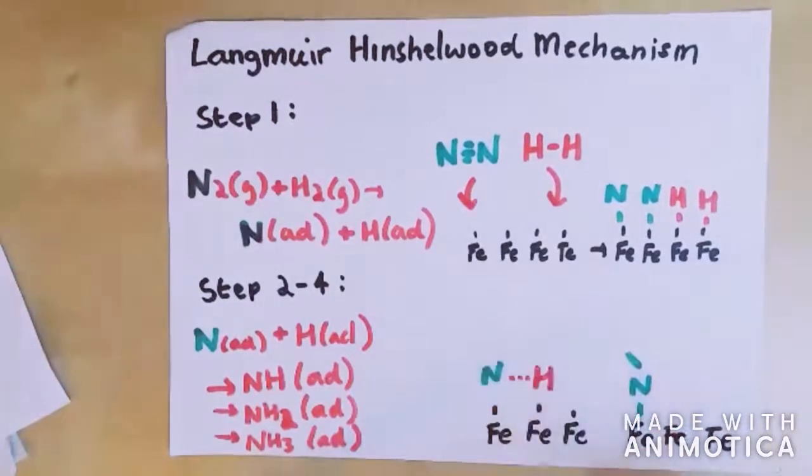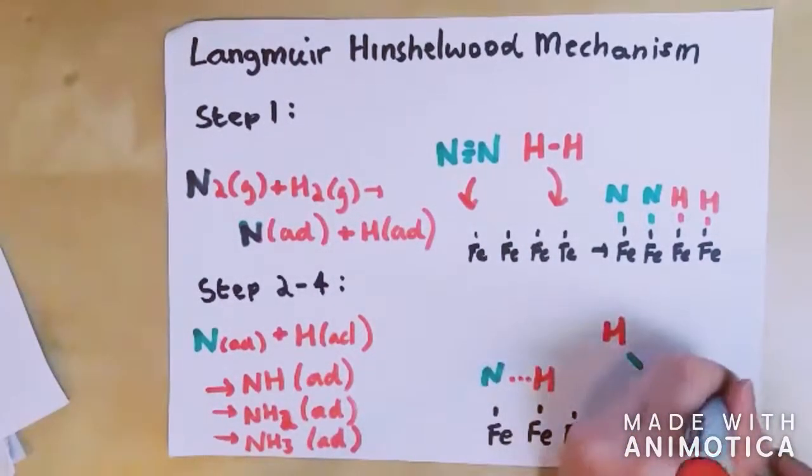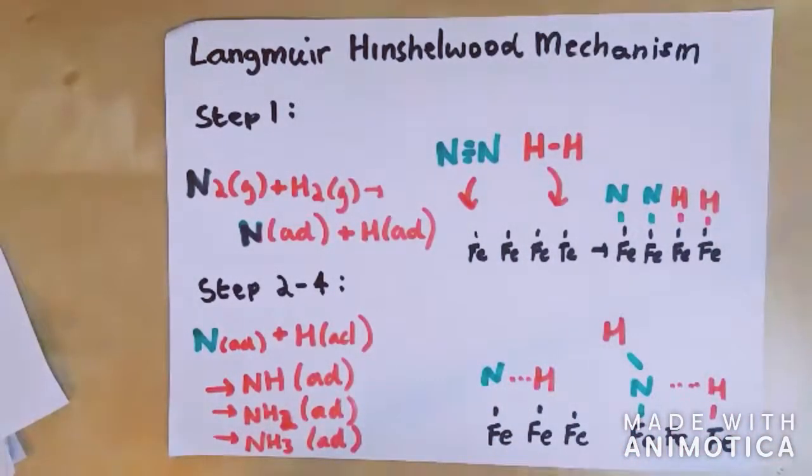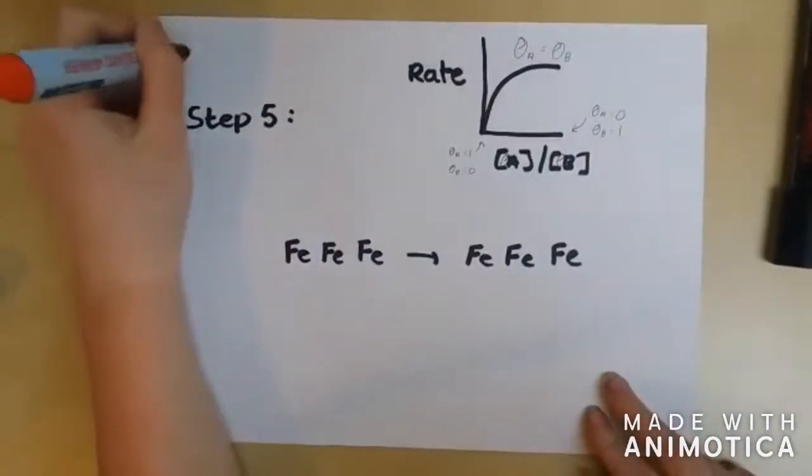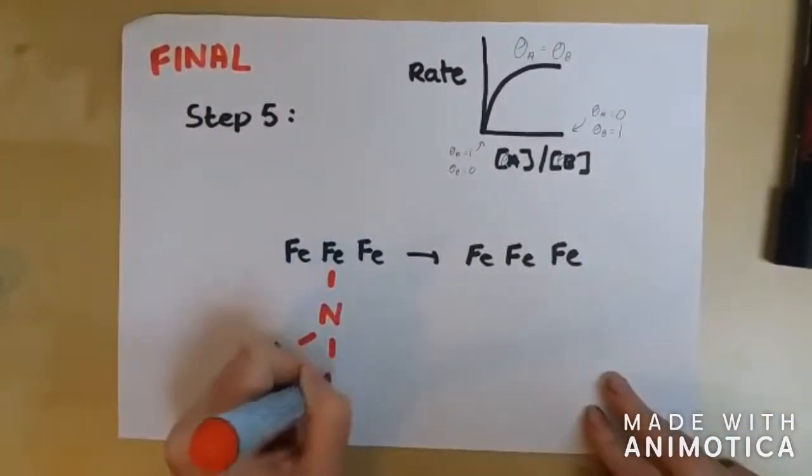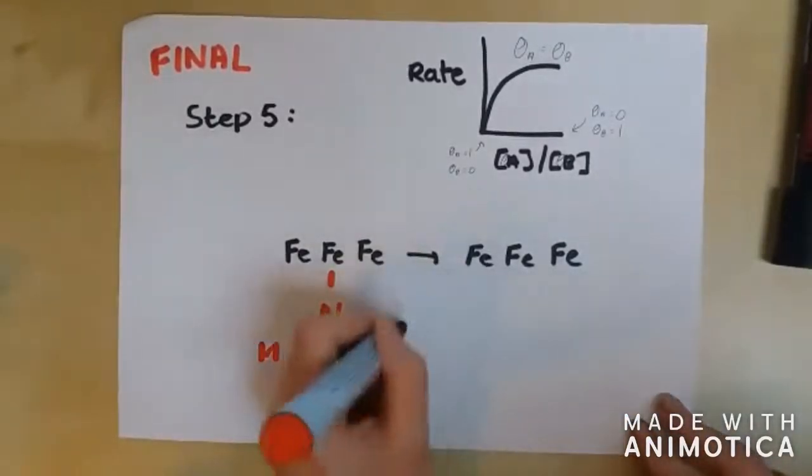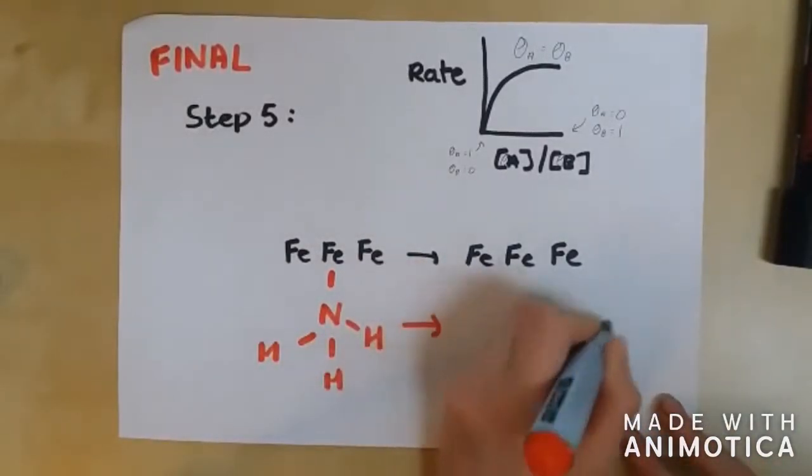The next step involves the combination of absorbed nitrogen with hydrogen until NH3 is formed. For ammonia gas to be produced and isolated, the ammonia must desorb from the catalyst surface. This is the final step of the reaction.